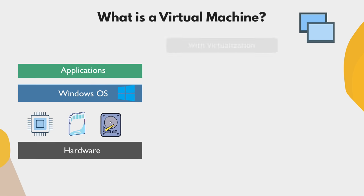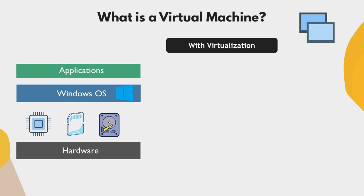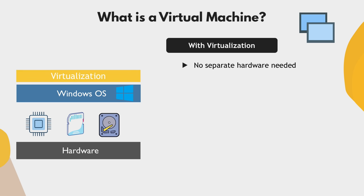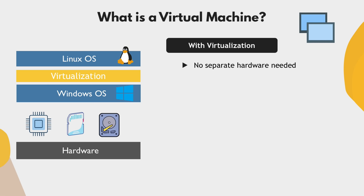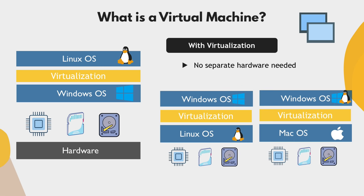What virtualization is, is that you don't need a separate physical hardware or physical computer to install an operating system. You can install Linux on top of the Windows OS, or vice versa — you can install Windows on Linux, or Windows and Linux on Mac OS. You can do any combination; you can even do Windows on Windows or Linux on Linux. And you can achieve that using something called a hypervisor.